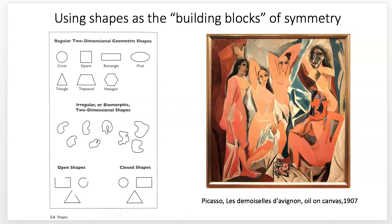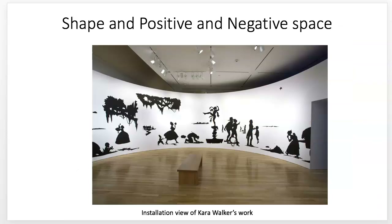For this project, you're going to be using shapes as the building blocks of your design. Shapes have different qualities, just like lines do — there are open shapes, closed shapes, irregular or biomorphic shapes like natural forms, and more regular or geometric shapes. A lot of paintings are basically shapes of color; that's mostly what painting really is. This Picasso cubism piece is an early example of that style in modern art. You're going to be using shapes of cut paper, and shapes have both a positive shape and negative space.